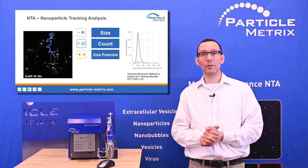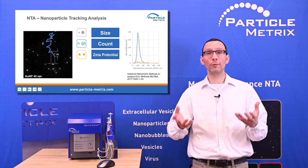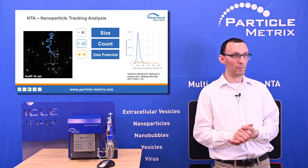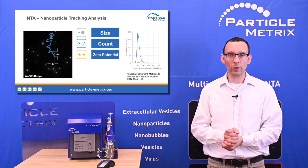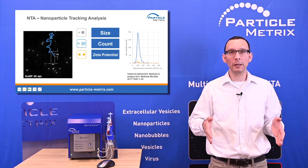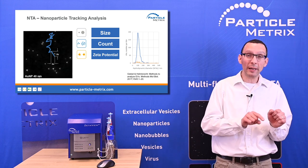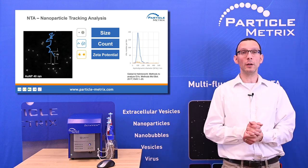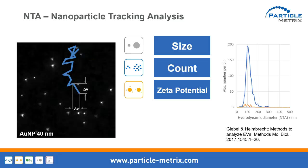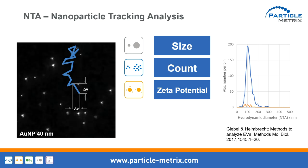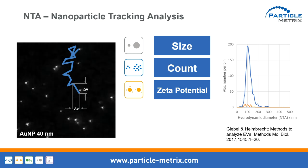ParticleMetrics is historically known for zeta potential measurement instruments. The first instrument was a zeta potential measurement instrument, which is related to the surface charge. Whenever you have electrodes in a liquid and apply a voltage, an electrical field is created, and depending on their charge, the particles migrate toward one of the electrodes. We later learned we could also measure size, because we were already tracking particles in the electrical field, and then we introduced size and concentration measurement.